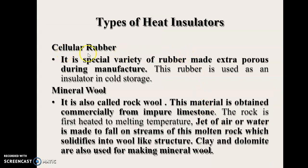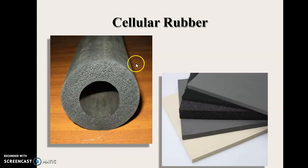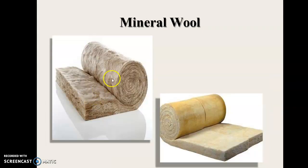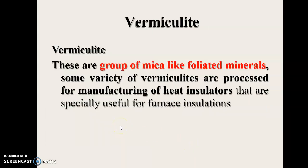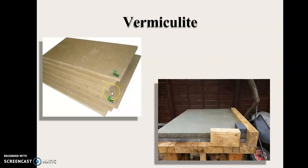Cellular rubber is a special variety of rubber made extra porous during manufacture. Mineral wool, also called rock wool, is obtained commercially from impure limestone. Vermiculite refers to a group of mica-like foliated minerals; some varieties of vermiculite are processed for the manufacture of heat insulators.